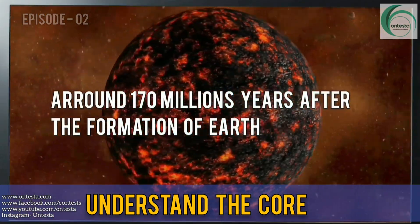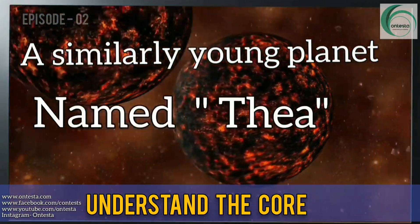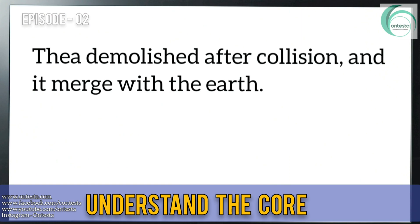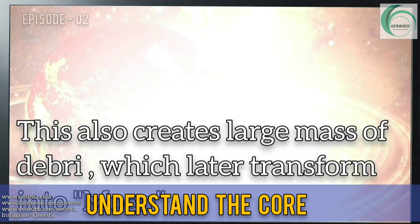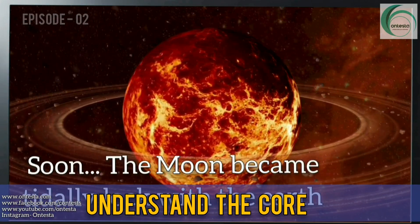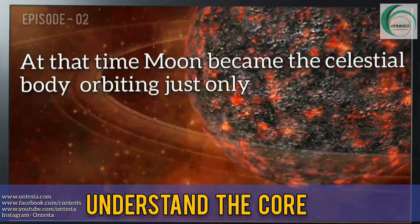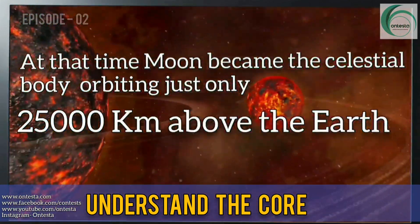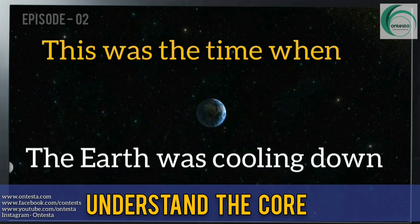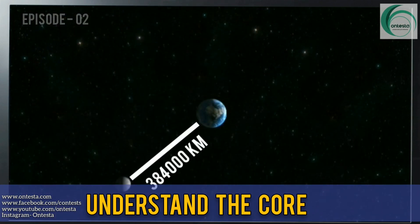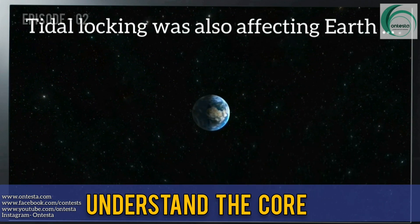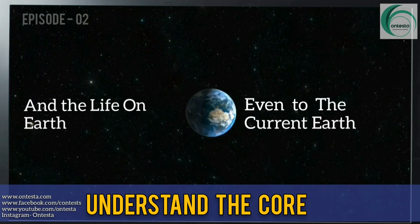Around 170 million years after the formation of Earth, a similarly young planet named Thea collided with Earth. In this collision, Thea demolished and merged with Earth, and Earth's mass therefore increased. This also created a large mass of debris which later transformed into the Moon. The Moon became tidally locked with Earth, orbiting just 25,000 kilometers above it. This was the time when Earth was cooling down, and the distance between the Moon and Earth also increased. Tidal locking was also affecting Earth even through to the current Earth and the life on it.